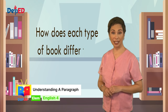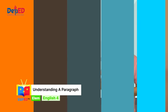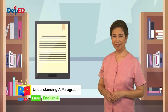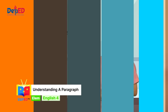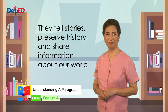How does each type of book differ from the other? These books differ in terms of how they are made. The ancient scrolls are made out of the papyrus plant. Codices are made up of parchment papers bound with wooden covers. The books that we have today are printed by machines. And the e-books are made electronically and you can read them on gadgets. Question number four: why do we need books? We need books simply to get information. As mentioned in the first paragraph, they tell stories, preserve history, and share information about our world.